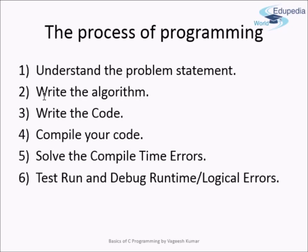Then you have to write an algorithm for this solution — we will learn about algorithms as we go ahead. Step 3 is to write the code to implement your algorithm. Then you have to compile your code. Compilation is the step in which you convert your source code from a high-level language to object code that is readable by the machine.